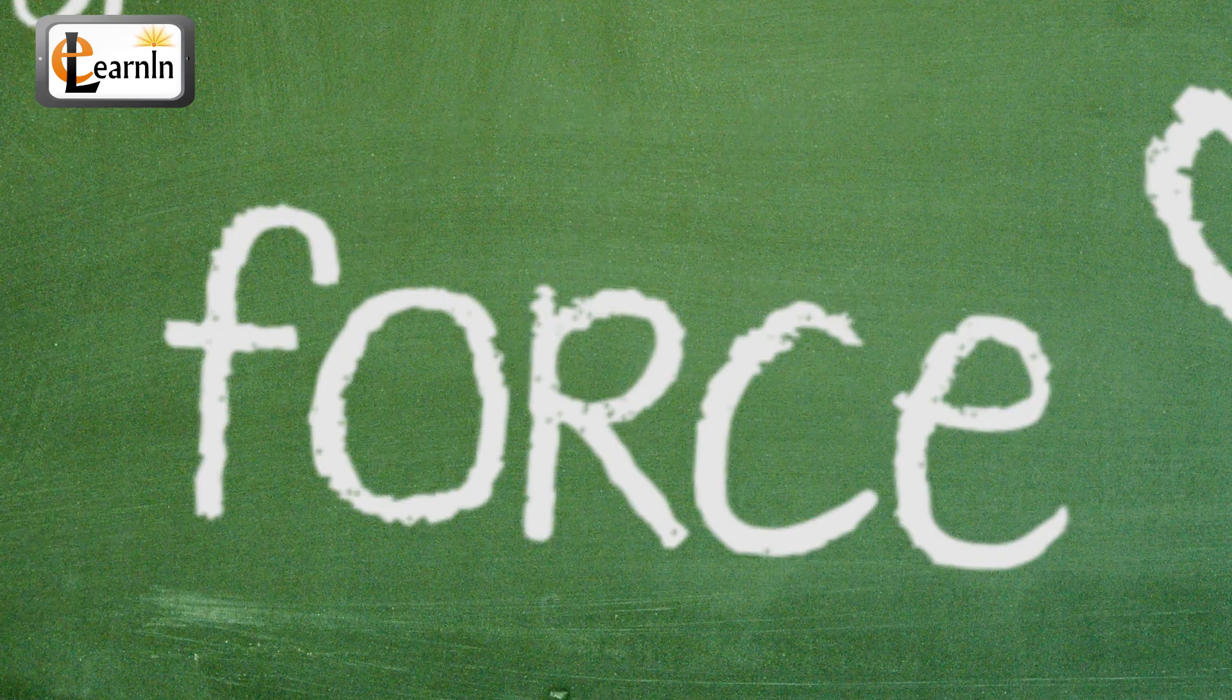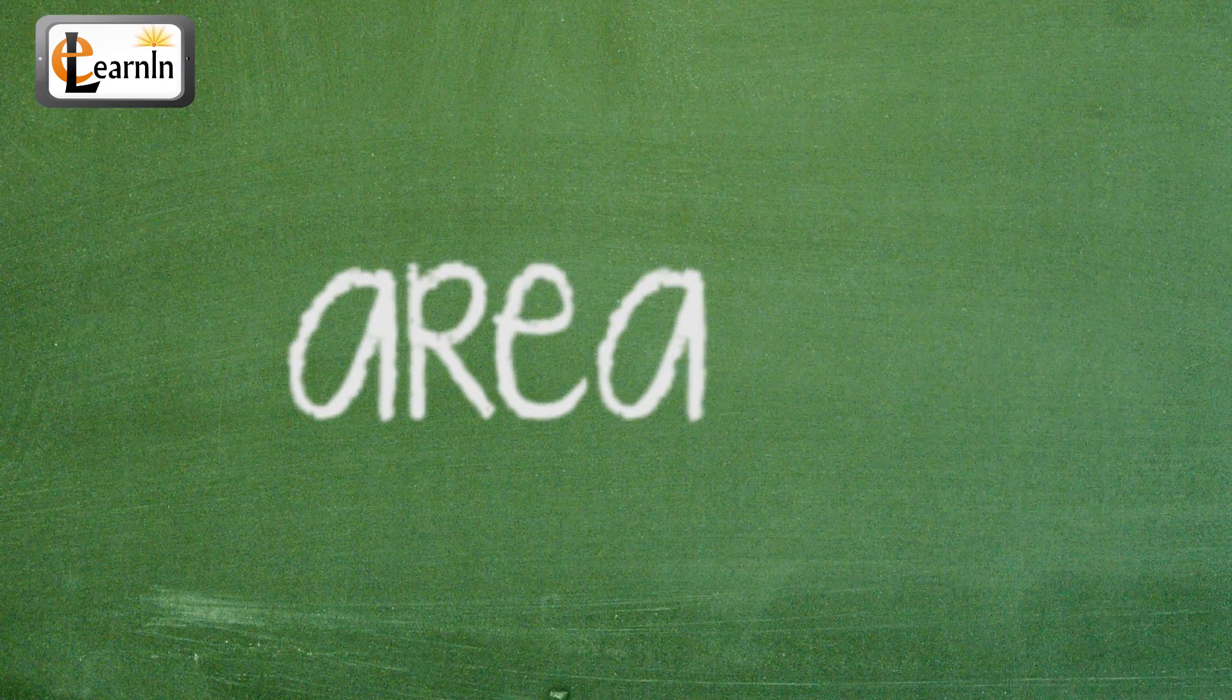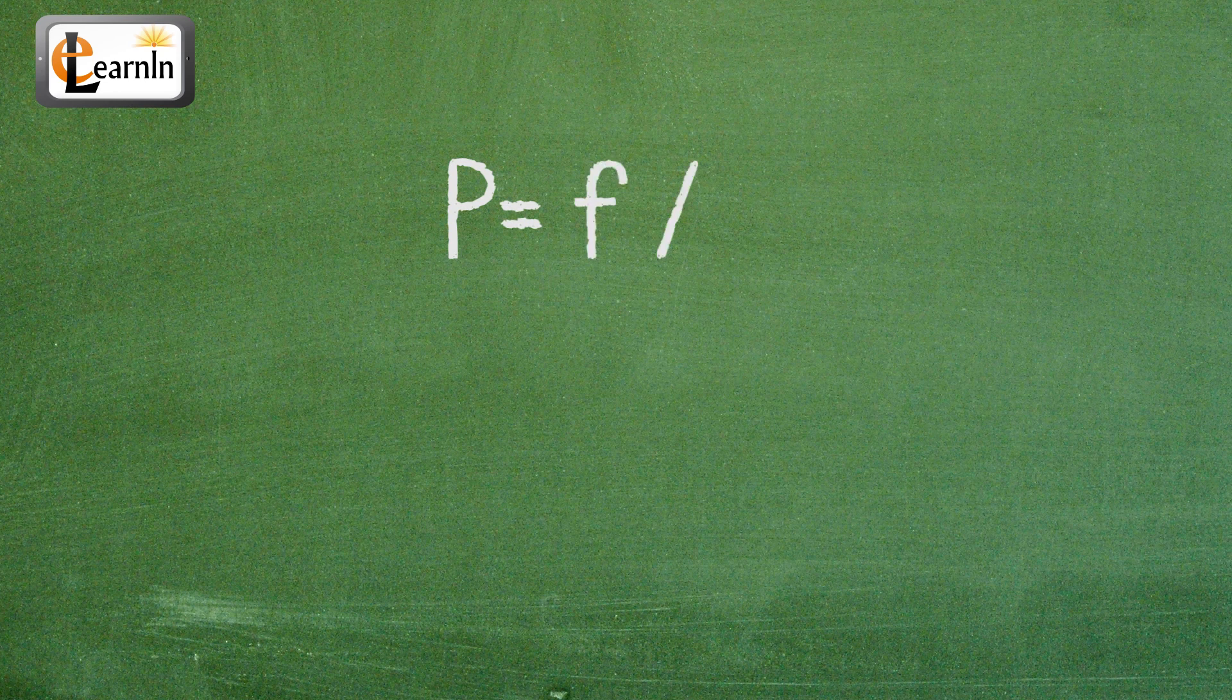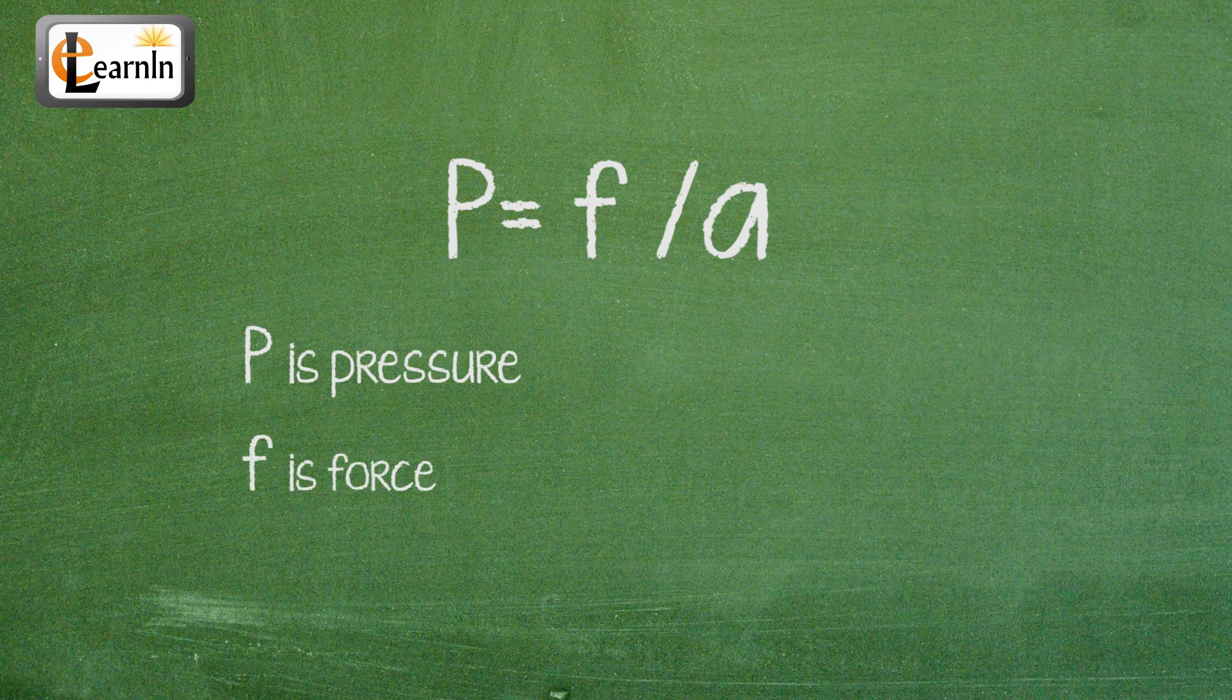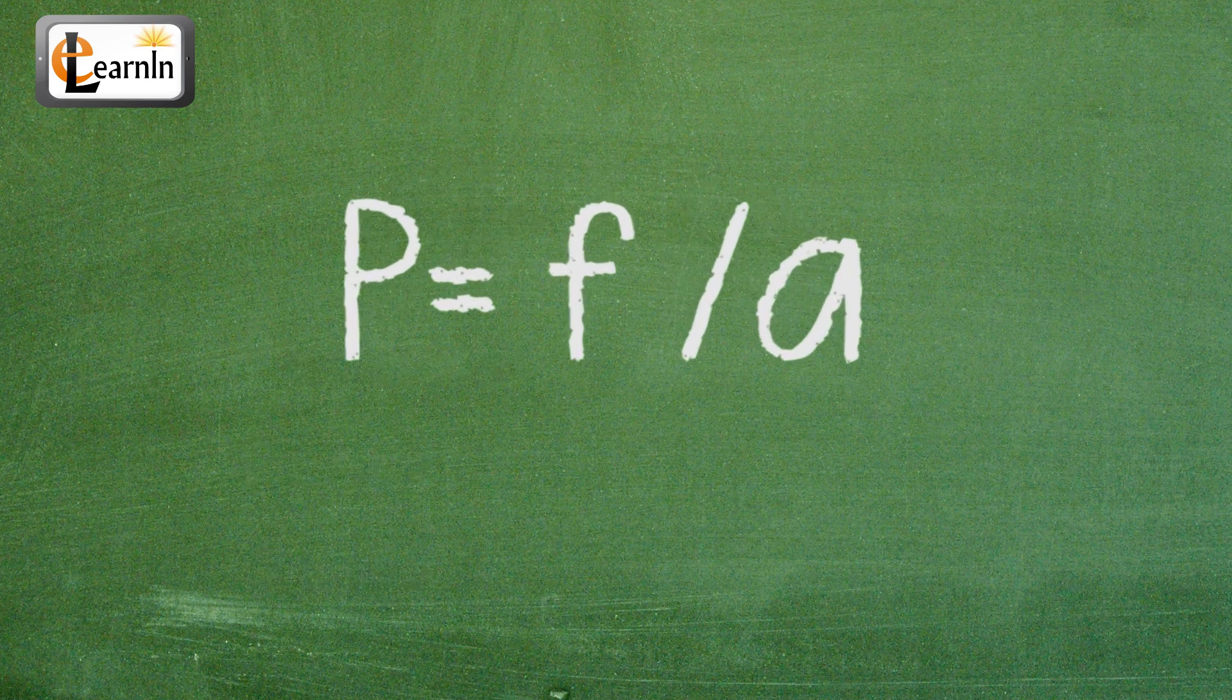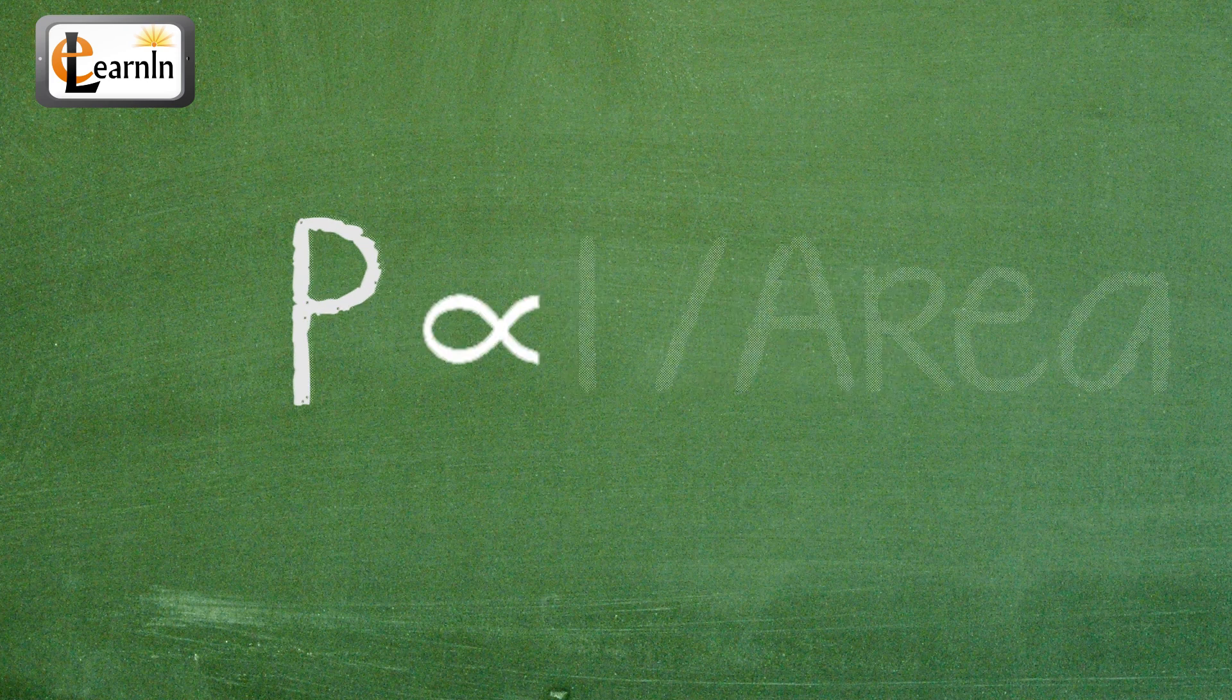Pressure is defined as the force acting per unit area and is given by the relation P equals F divided by A, where P is the pressure, F is the force acting, and A is the area. So from this relation, we can know that pressure is inversely proportional to area.